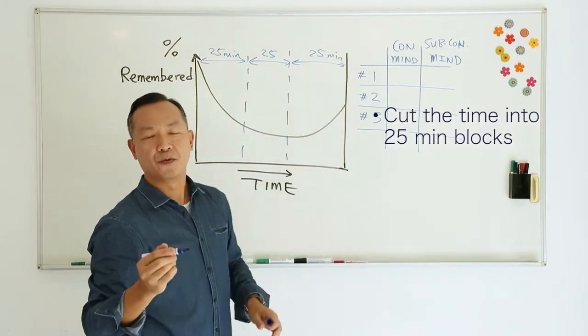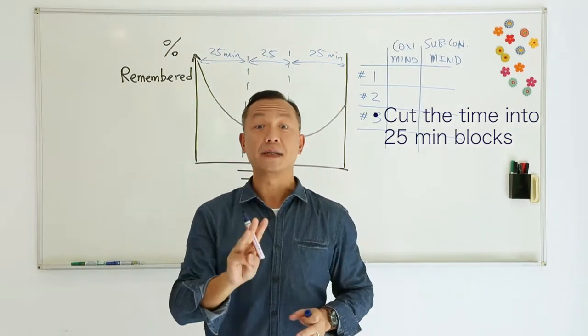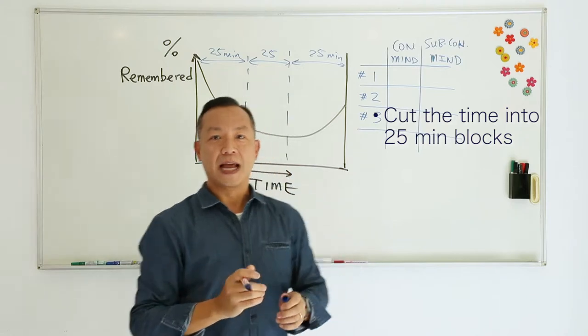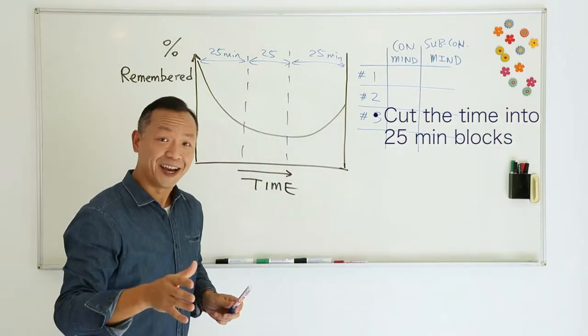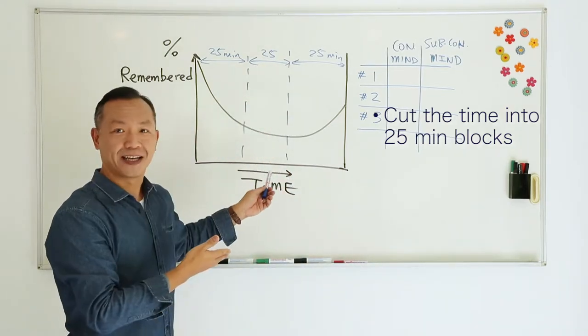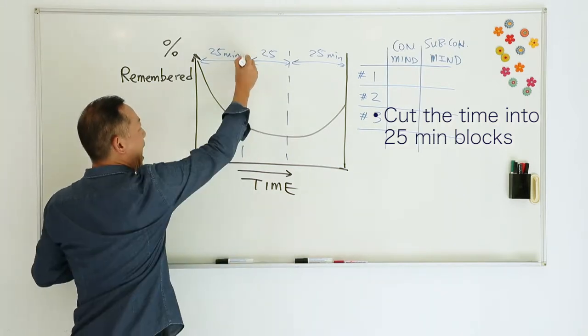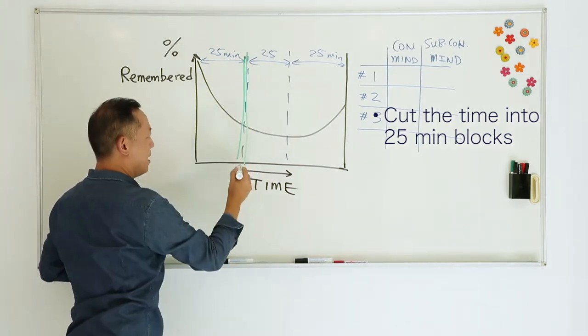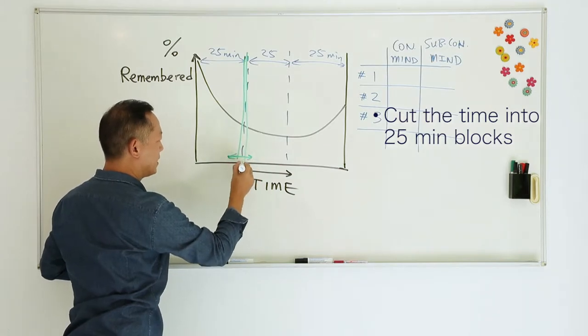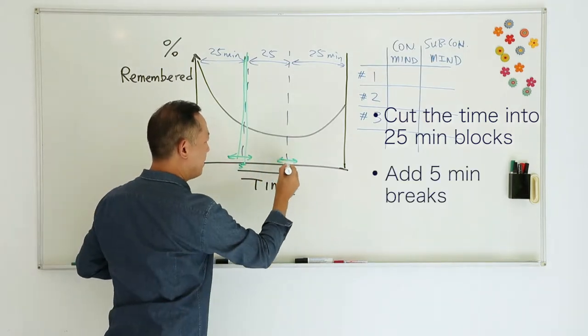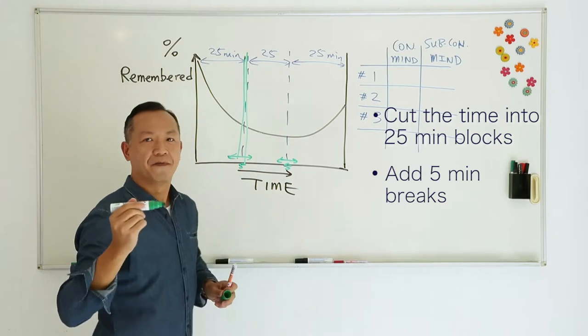So essentially, we are going to have three chunks of 25 minutes each. Now, I'm a nice guy, so you can take a short break in between. And as you take a short break, how long should the breaks be? Make it about five minutes. So every time when you take a short break, five minutes.